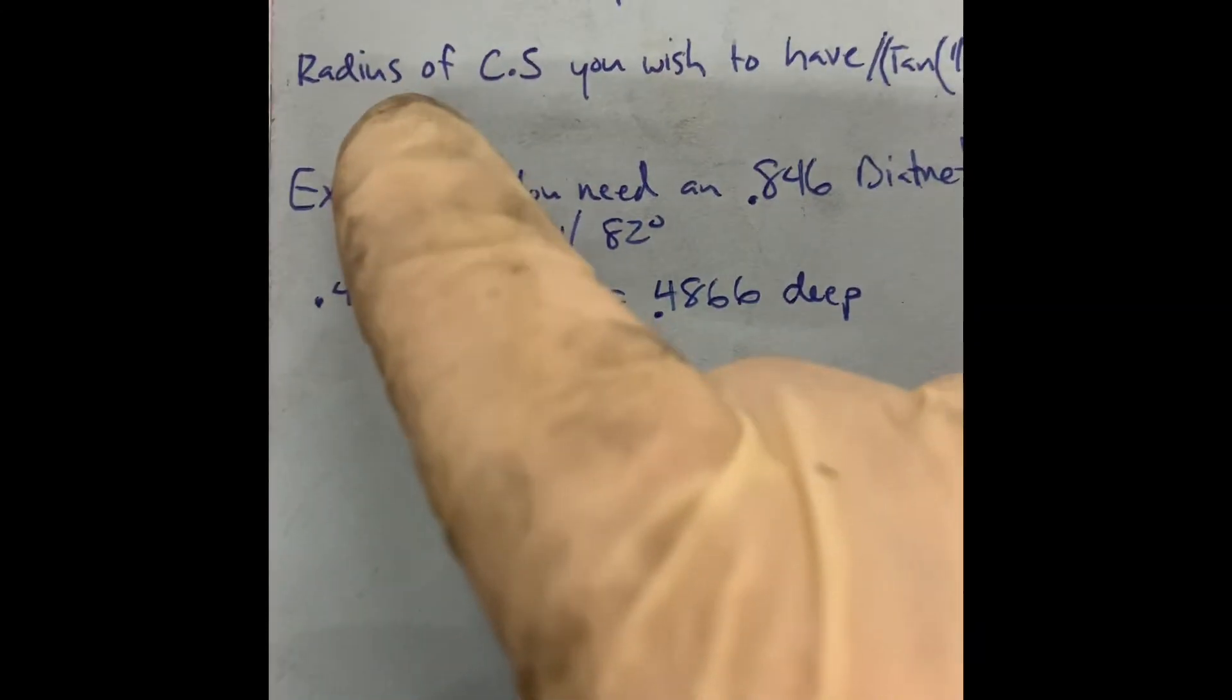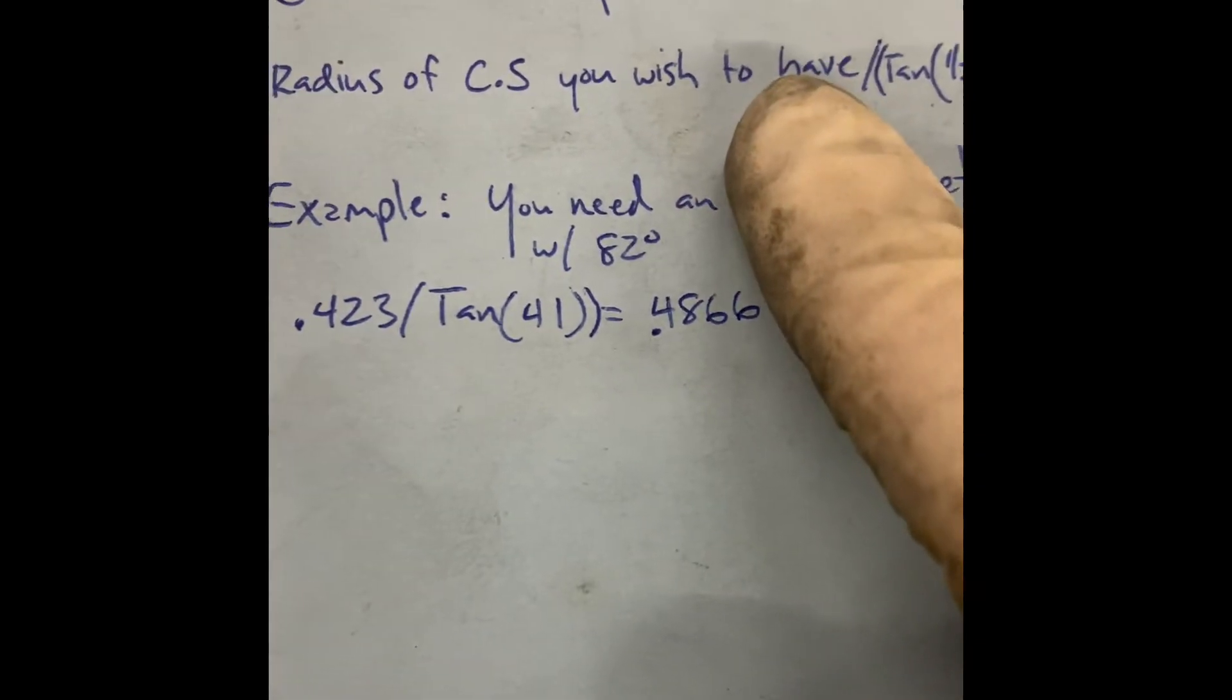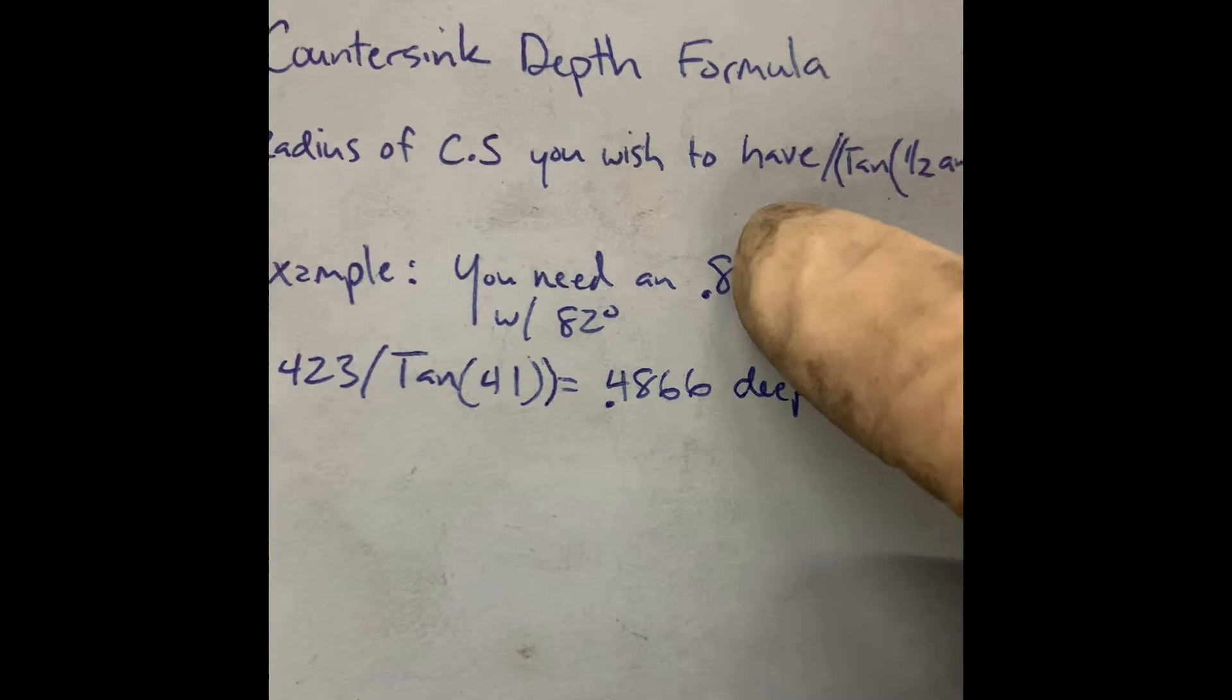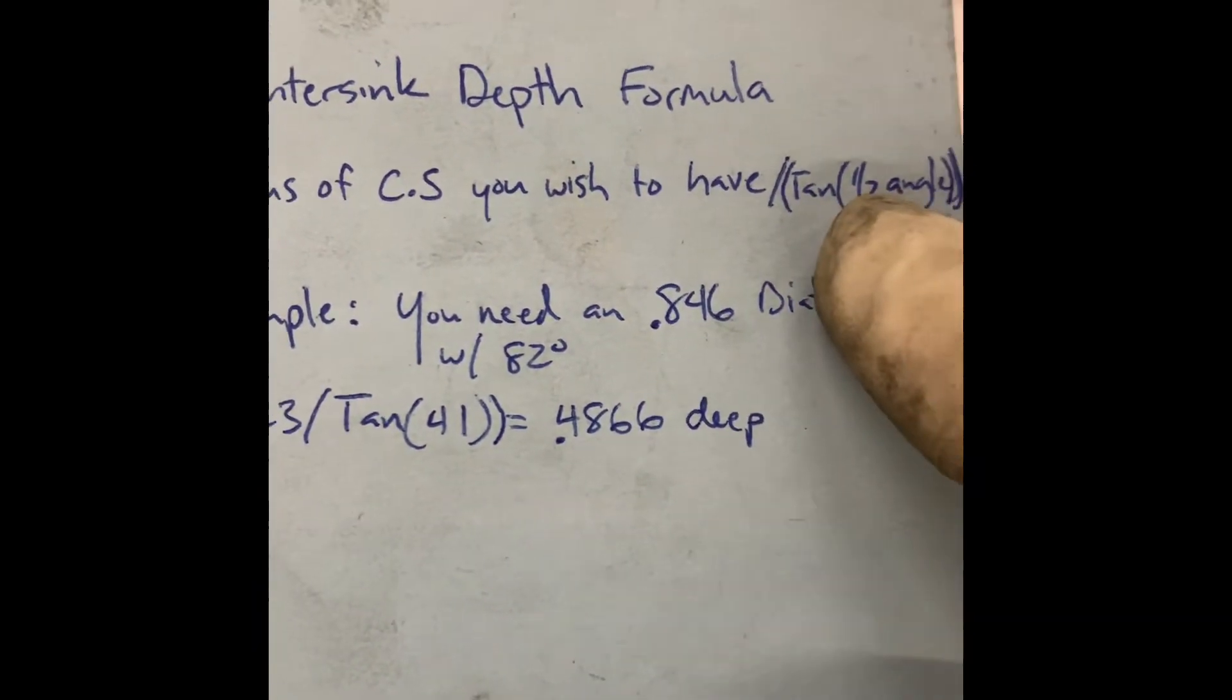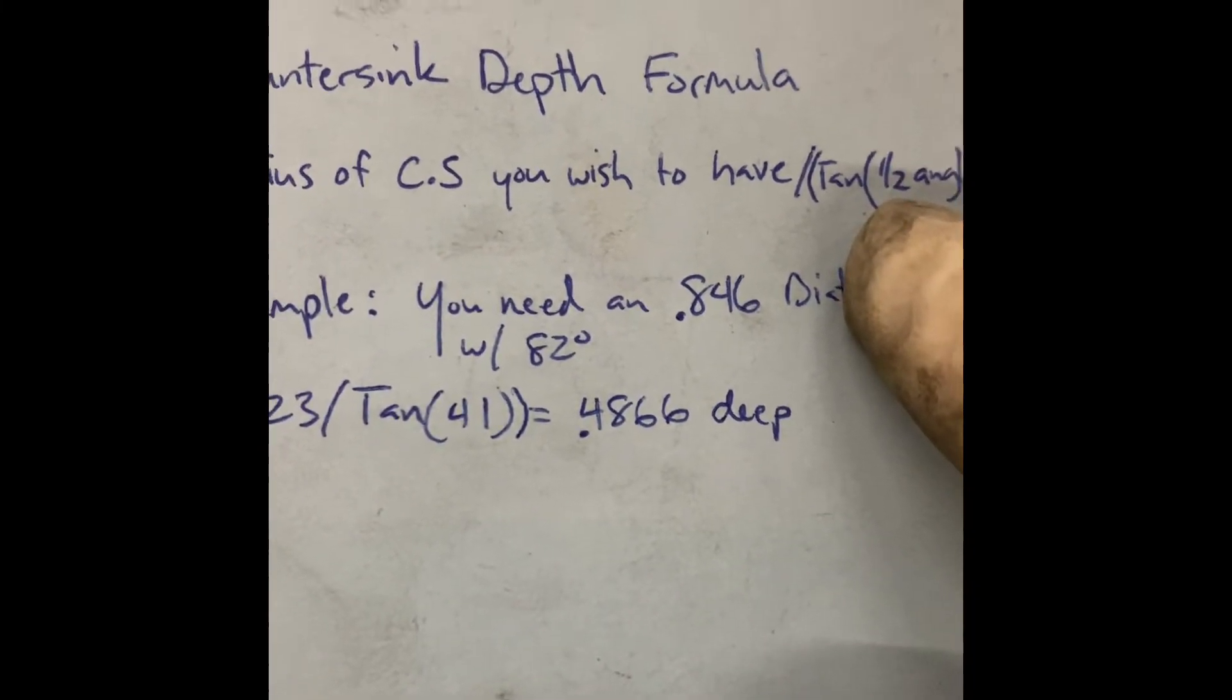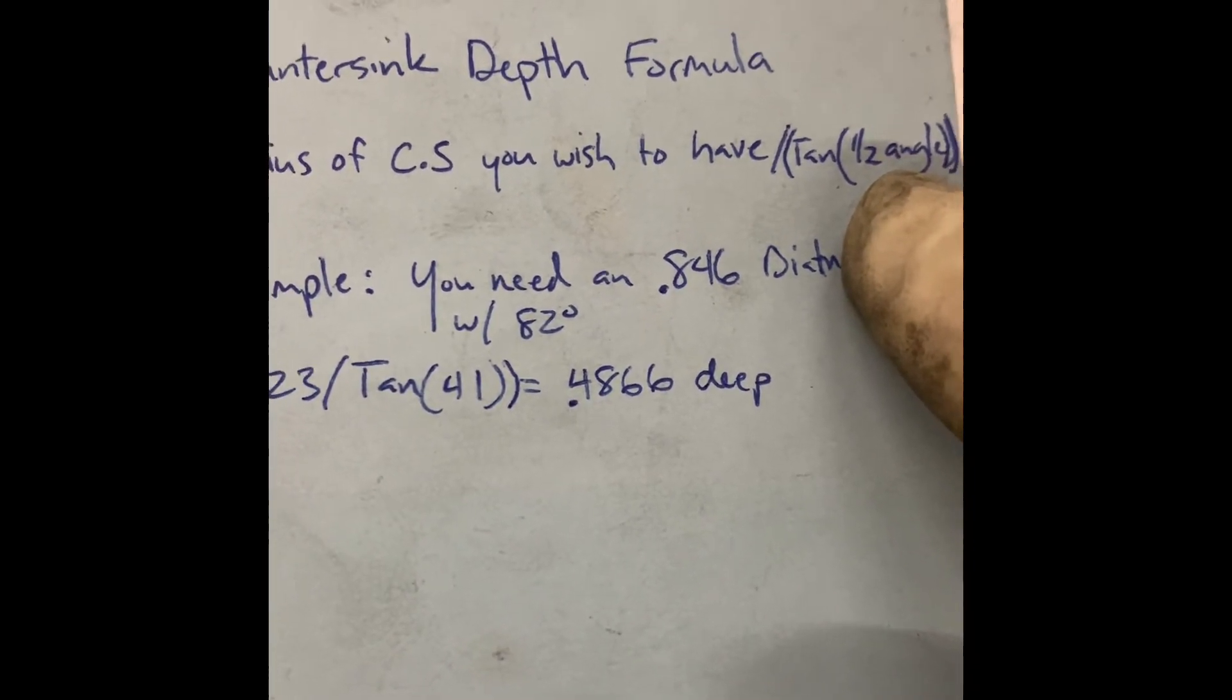So we're going to take the radius of the countersink you wish to have. Should be in the print dimension. The radius of the print dimension divided by the tangent of half the angle of the countersink. So if you're using, let's say an 82 degree, would be 41 here. The tangent of 41.